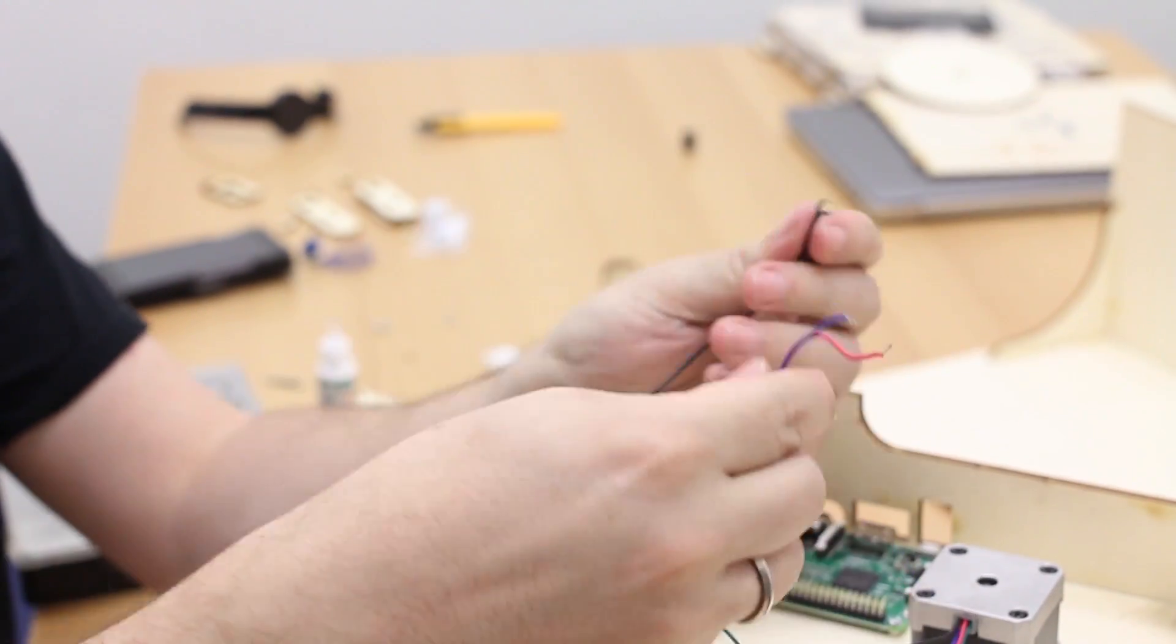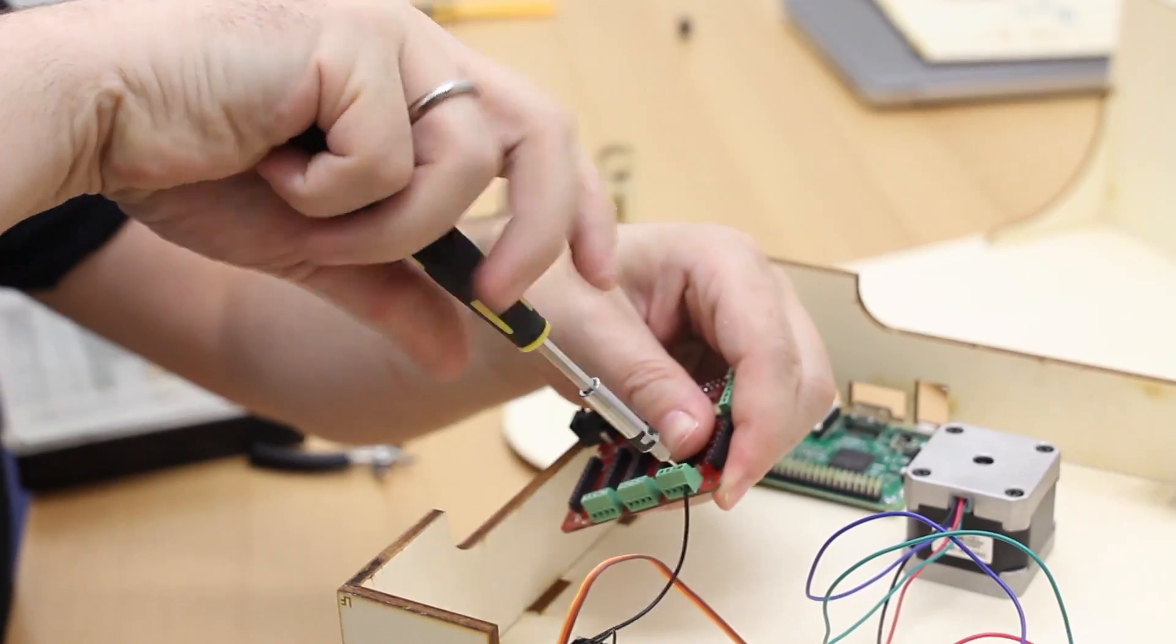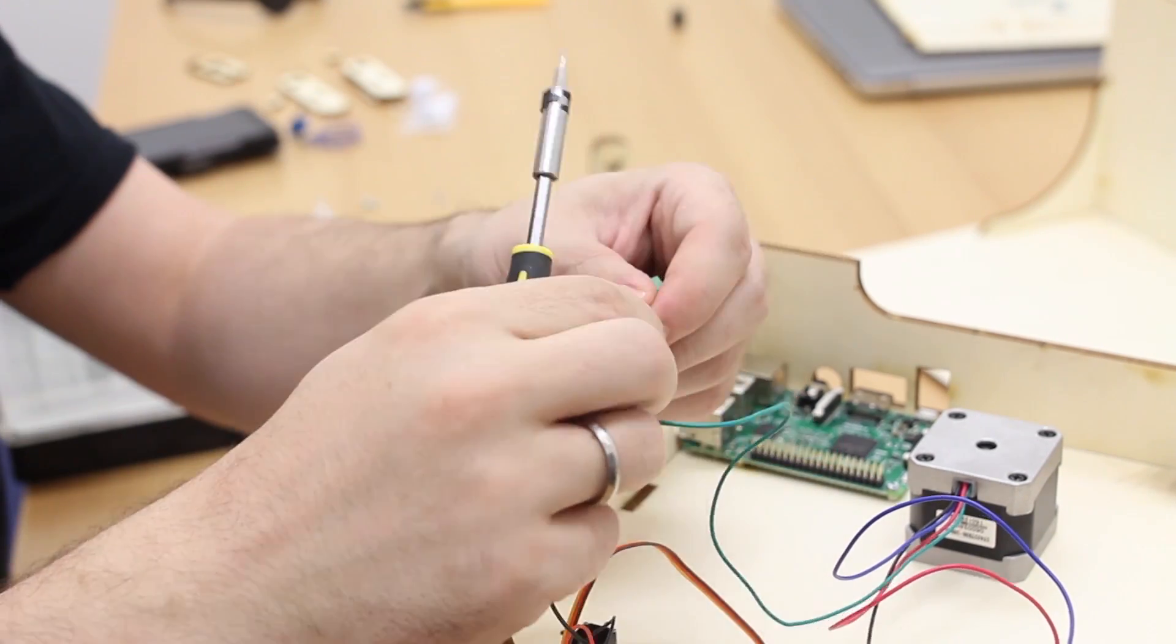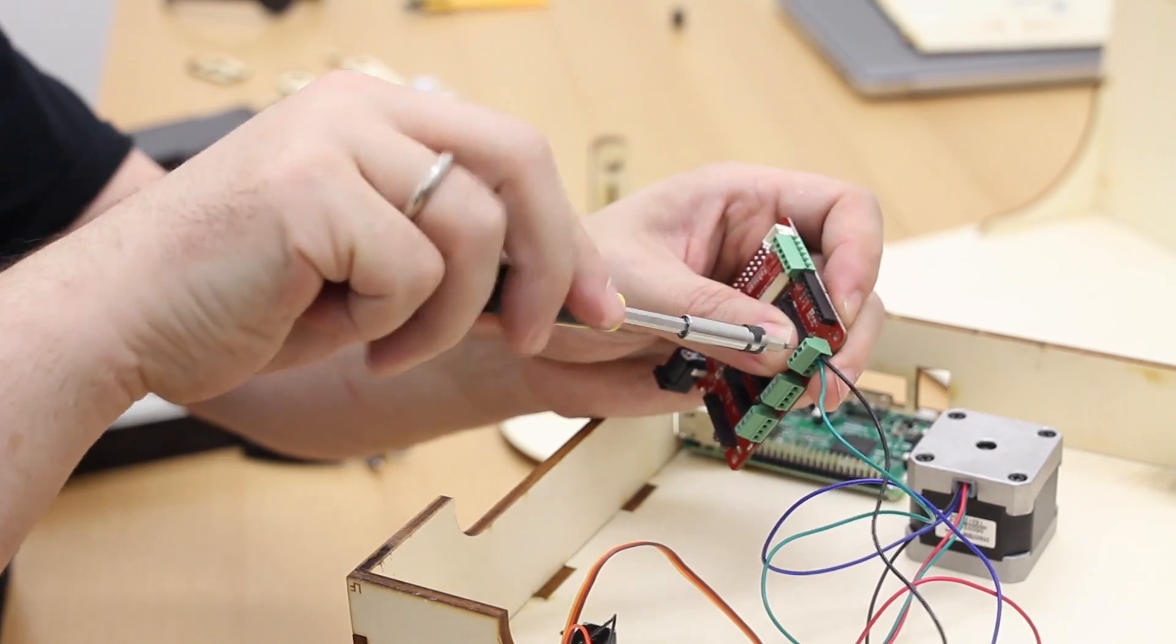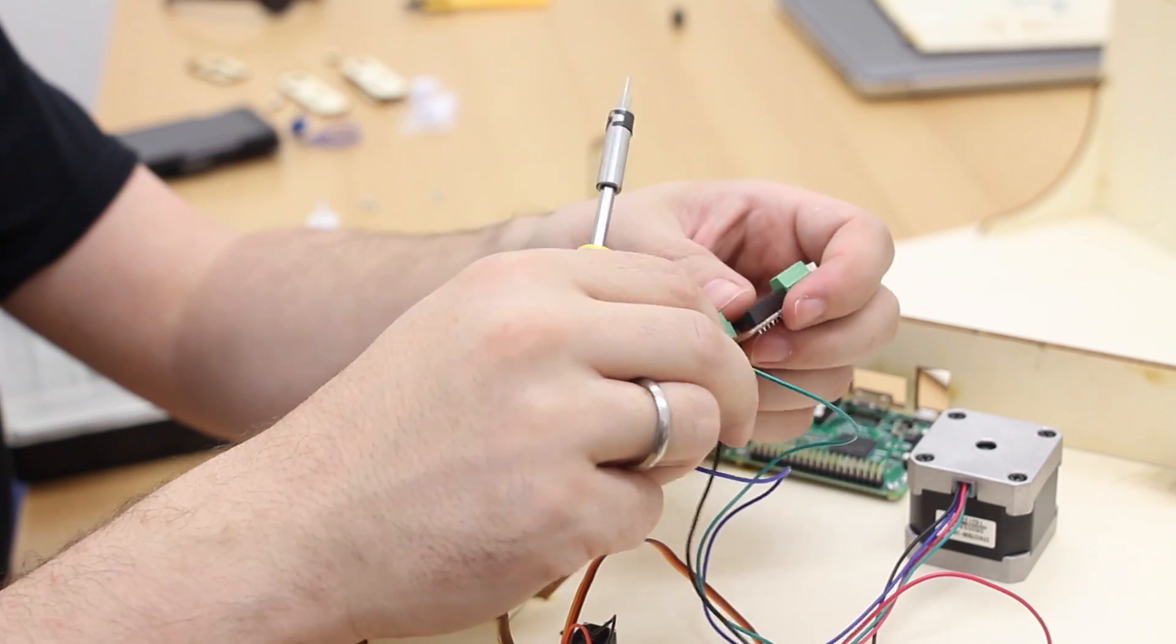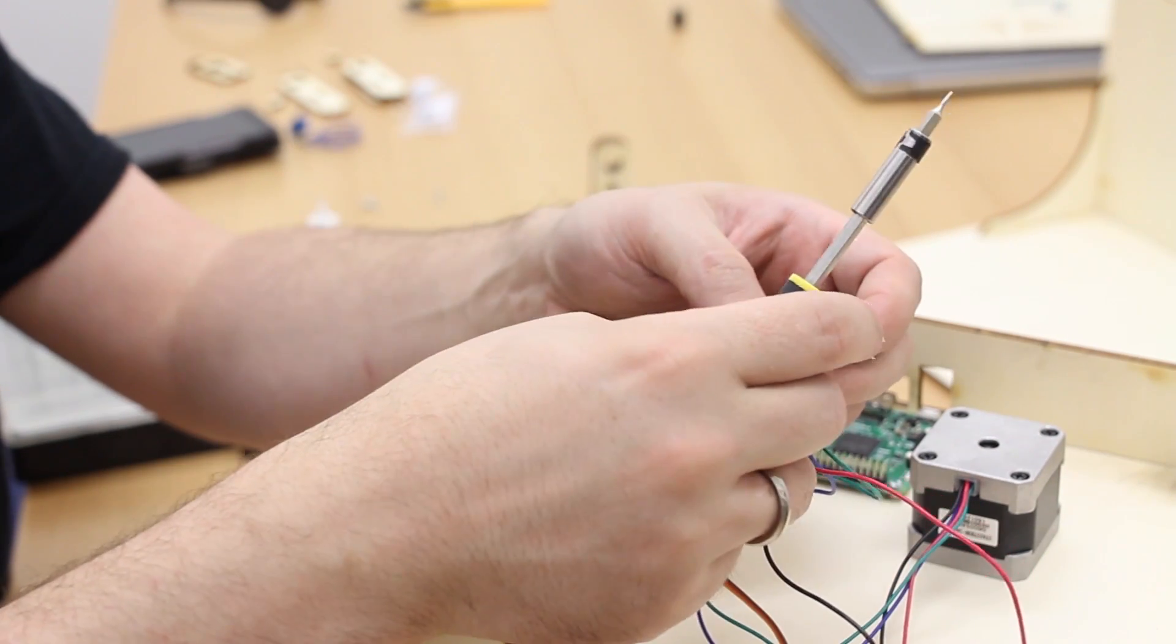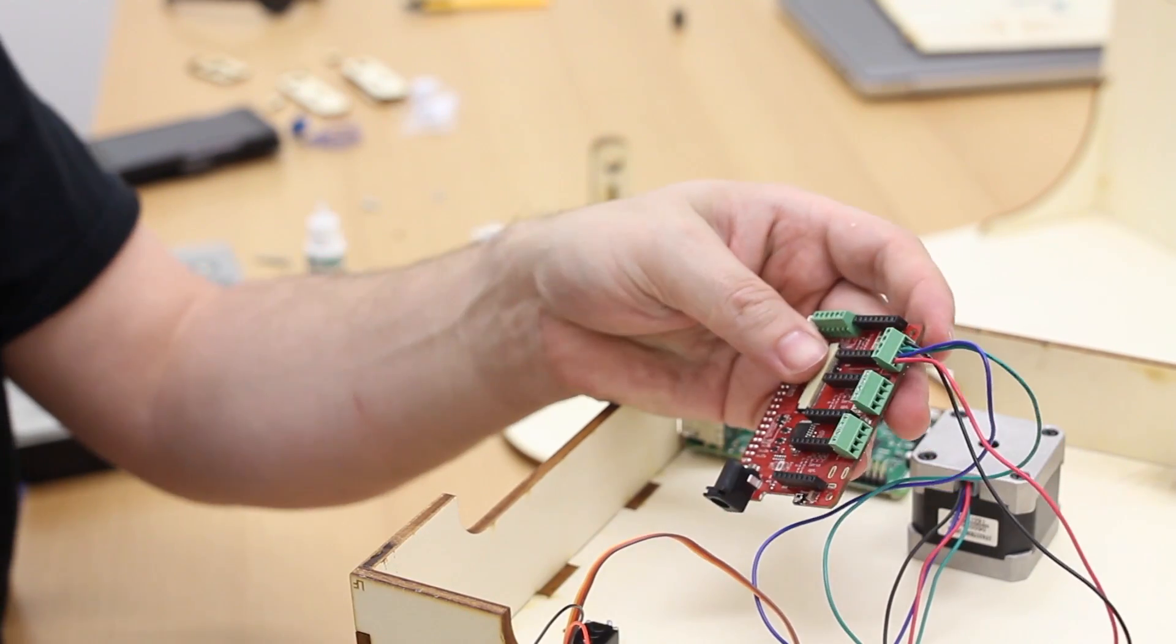And then we start with the wiring of the motor. There is a screw terminal for the stepper driver that connects the head to the motor. You probably will have different colors for your wires, but pay attention to the video if you are having the same motor as we have. So screw in all the four wires and then the stepper motor is done.